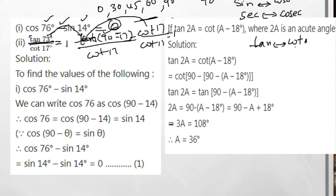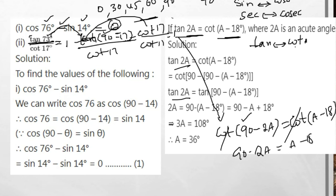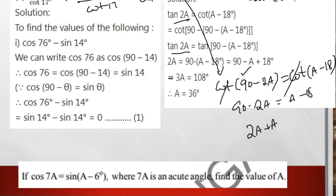Make a note: tan 2A = cot(A − 18°). Using the complementary concept, tan 2A = cot(90° − 2A), so 90° − 2A = A − 18°, which gives 3A = 108°, so A = 36°.